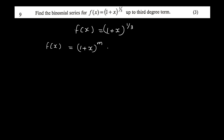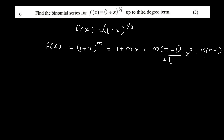The general binomial expansion is: 1 + mx + m(m-1)/2! · x² + m(m-1)(m-2)/3! · x³ + etc.